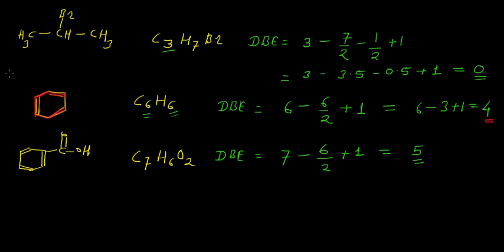You can see that we have 3 double bonds in the ring, and 1 ring — so 3 plus 1 is 4. And here we have 1 double bond between carbon and oxygen. So the double bond equivalent or degree of unsaturation in benzoic acid is 5.